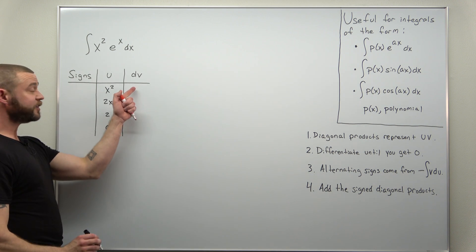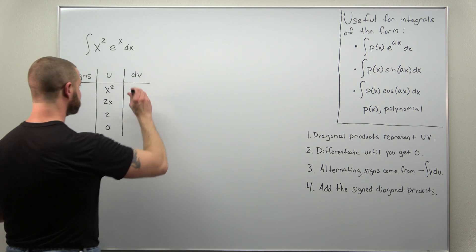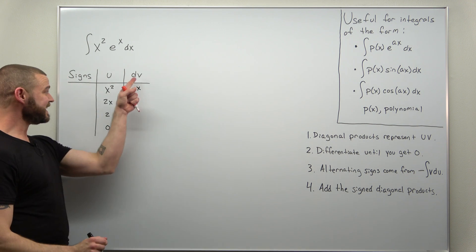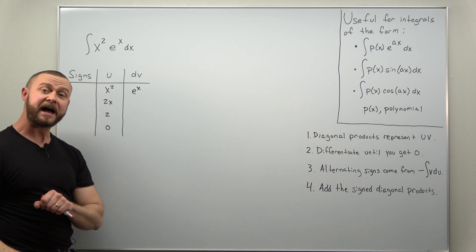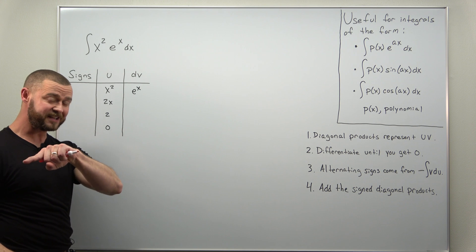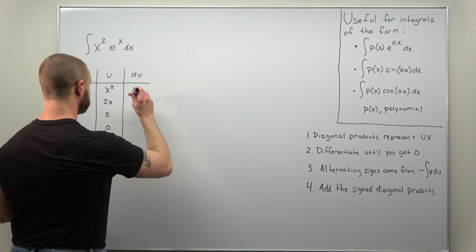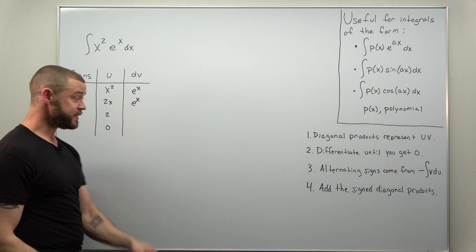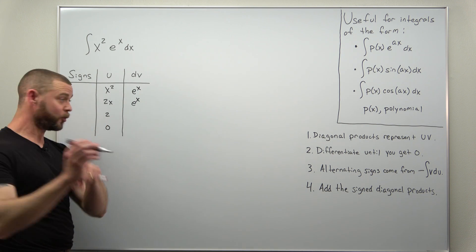We will choose here dv as e to the x, and we repeatedly integrate this last column. Remember, you integrate dv to get v. So your anti-derivative for e to the x is just e to the x, and it's e to the x all the way down.